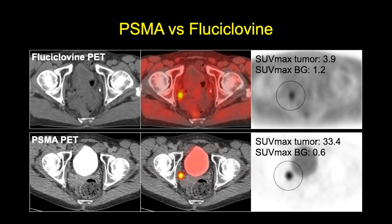Fluciclovine is widely available in the United States, reimbursed by Medicare, and is currently the standard imaging modality for prostate cancer patients. Moving forward, PSMA PET will replace fluciclovine, but it's not yet widely available. You can see focal uptake in a right pelvic sidewall lymph node on both fluciclovine and PSMA PET. The uptake in the tumor on fluciclovine is 3.9 compared to adjacent background of about 1 to 1.2 — roughly a 3-to-1 tumor-to-background ratio. On PSMA PET that ratio is more like 50.